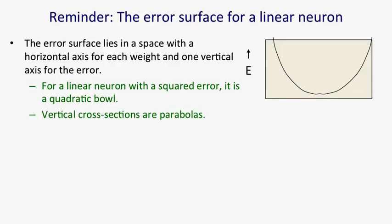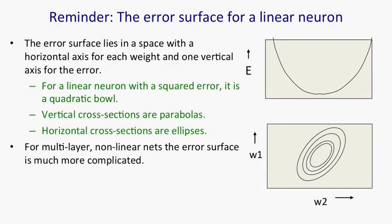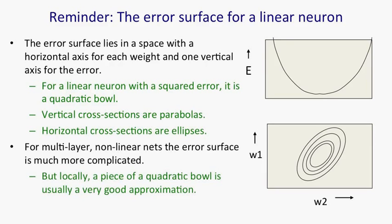The vertical cross-sections are parabolas, and the horizontal cross-sections are ellipses. For multi-layer non-linear nets, the error surface is much more complicated, but as long as the weights aren't too big, it's a smooth error surface, and locally, it's well approximated by a fraction of a quadratic bowl. It might not be the bottom of the bowl, but there's a piece of quadratic bowl that will fit the local error surface very well.